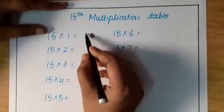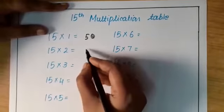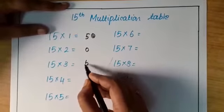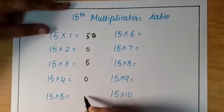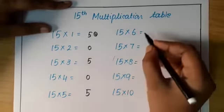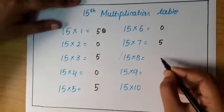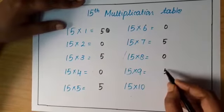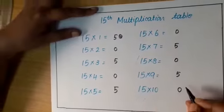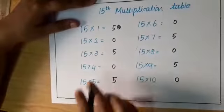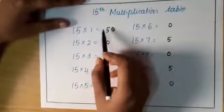So I am writing here 5, 0, 5, 0, then 5, 0, then 5, 0, 5, 0. So leave the space here. So now we are going to fill this space.